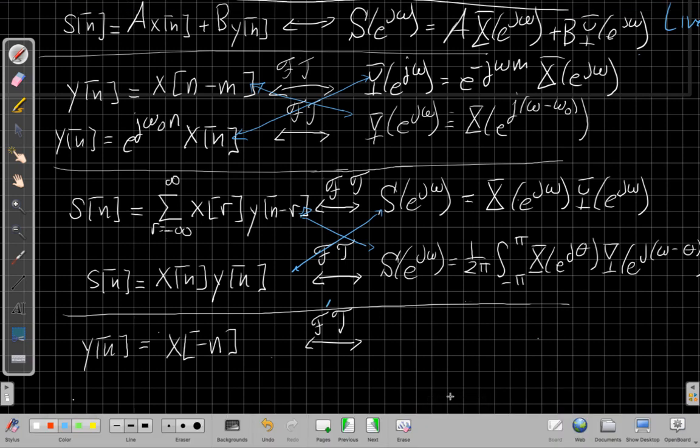Another property we didn't really talk about in periodic signals, you don't use it quite as much, is what happens if I flip something in time. If I have y of n as x of minus n, then we end up actually that we're flipping in frequency also. That it's the same as saying I've got e to the minus j omega in x, y of e to the j omega is x of e to the minus j omega in frequency. So these are a bunch of properties about manipulating signals.